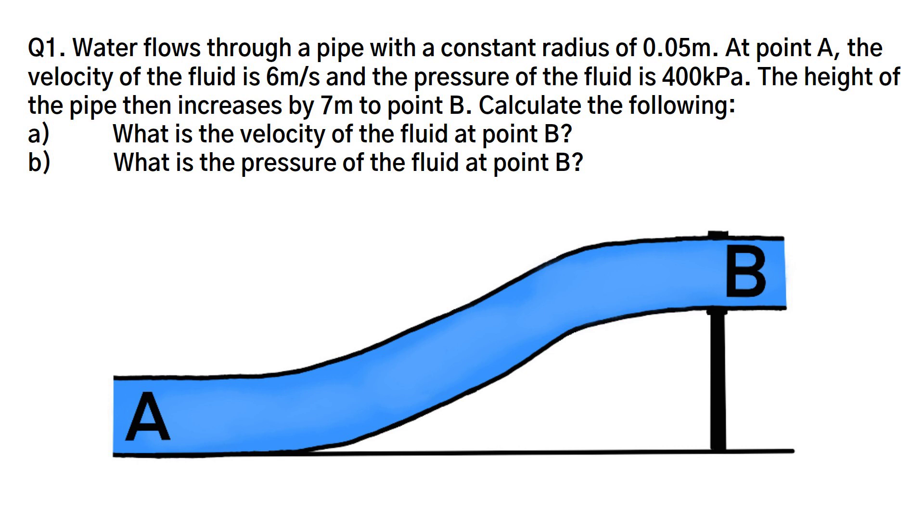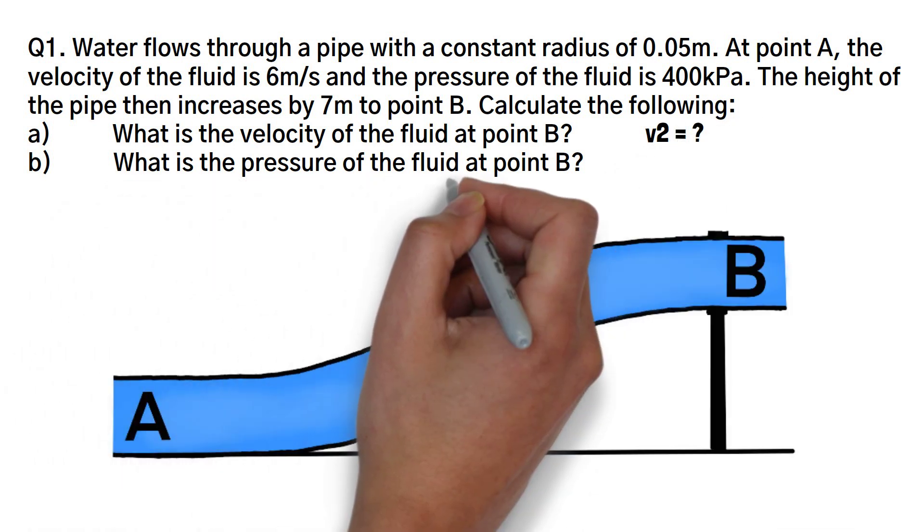The question requires us to calculate the following: a) what is the velocity of the fluid at point B and b) what is the pressure of the fluid at point B.